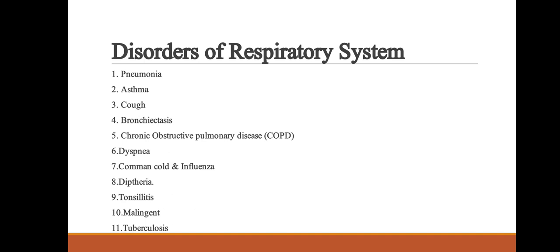Sixth, dyspnea: it is a condition in which there is difficulty in breathing, which may be due to weakness of nerves or muscles, or damage to the ribs or pleural cavities. Seventh, common cold or influenza: it is caused by rhinovirus and is highly infectious, characterized by a runny nose, sneezing, sore throat, and slight fever.